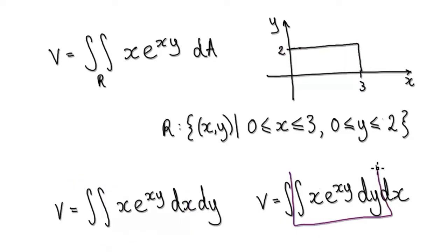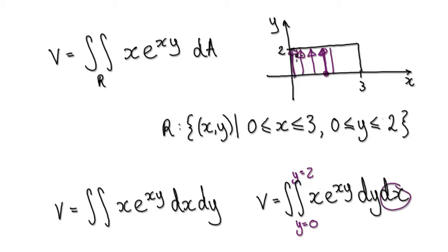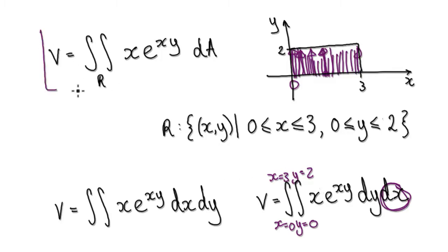The other option is dy dx. For the inner integral, you're moving parallel to the Y axis, scanning from 0 to 2. For the outer integral, it's dx, so X equals something on each side — scanning from X equals 0 all the way to X equals 3.